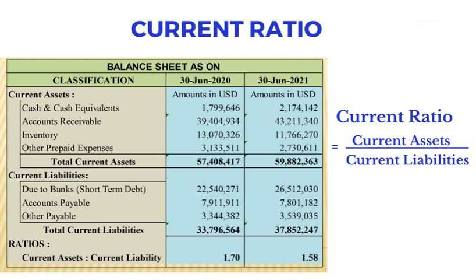In this scenario, it means how many dollars in current assets are available to cover each dollar of current liabilities. We have 1.70 in current assets to cover current liabilities on 30th June 2020, and 1.58 in current assets to cover current liabilities on 30th June 2021.